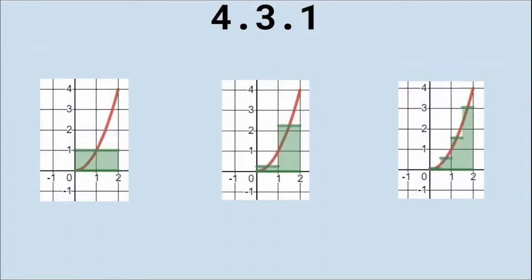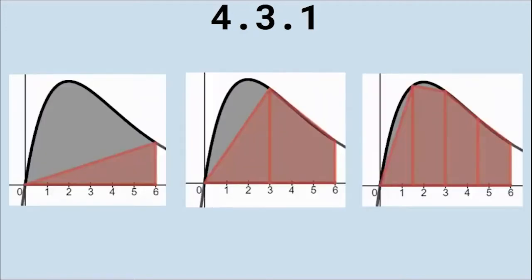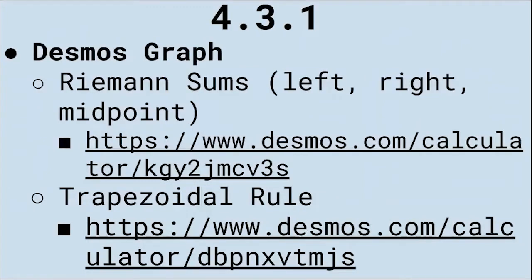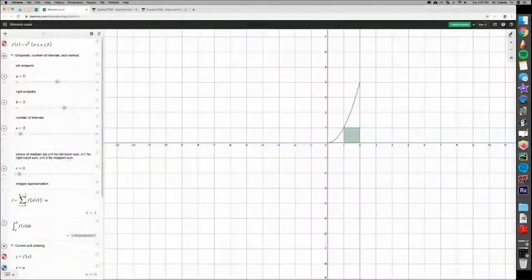There's also midpoint Riemann sums, where the rectangle is bounded by the middle of the top until the graph. This is even more exact — there's less wasted space. And then the last one is the trapezoid rule, where adding more and more trapezoids fills in the space more and more. A triangle is basically a trapezoid with one base length of zero. Adding infinitely many trapezoids yields the exact area.